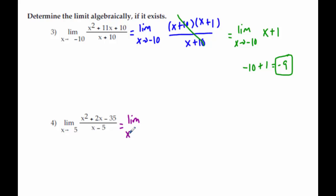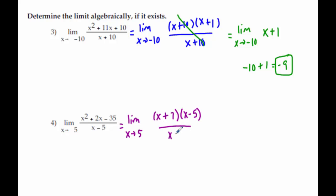If you look at the graphs of these, there's a hole where they're asking us to evaluate the limit, so you could probably figure these out graphically. But the problem is it asks you to do it algebraically, which means I need you to show the factoring step. What multiplies to get negative 35 and adds to get 2? That's 7 and negative 5. So the x minus 5s cancel and we just have x plus 7. Plugging in 5, we get 12.